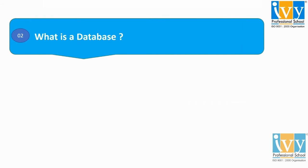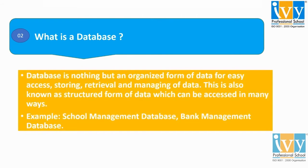Moving to the next question. Question 2: what is a database? A database is an organized form of data for easy access, storing, retrieval, and managing of data. This is also known as a structured form of data which can be accessed in many ways. In other words, a database is an organized collection of structured information or data, typically stored electronically in a computer system. A database is usually controlled by a Database Management System, that is DBMS. Examples of databases are school management database and bank management database.